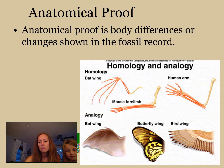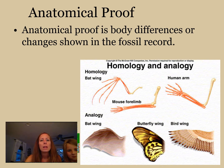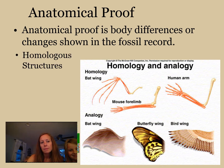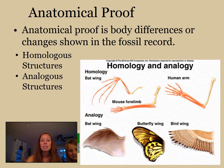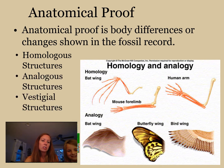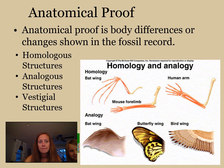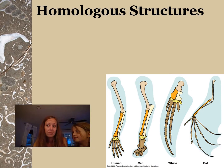Now switching to anatomical proof — anatomical proof refers to body differences or changes shown in the fossil record, combining fossil proof with the shape of the body. There are three different things we look for: homologous structures, analogous structures, and vestigial structures.